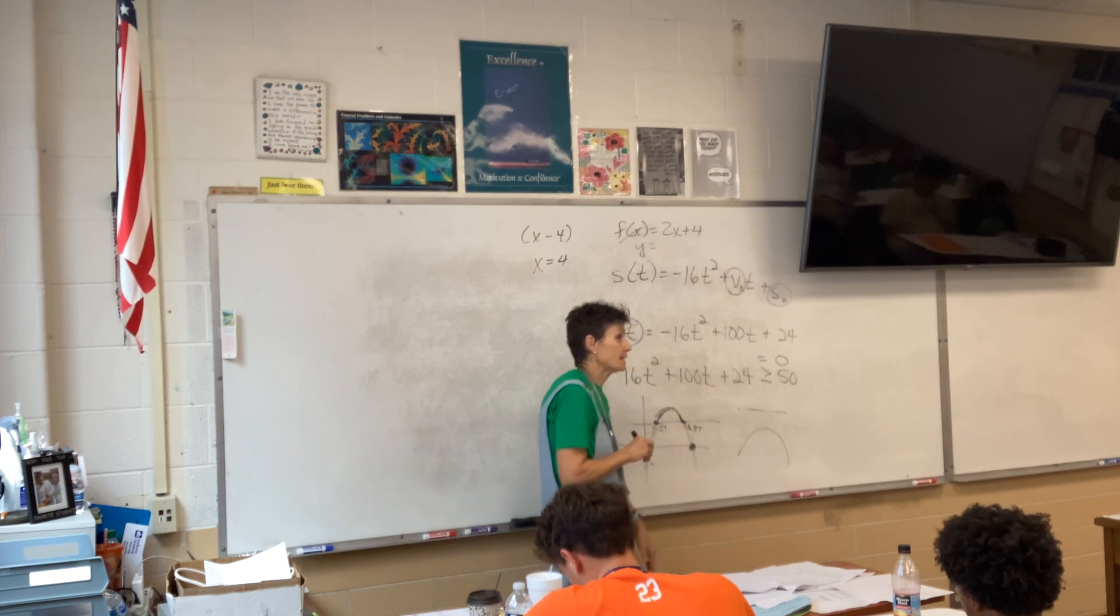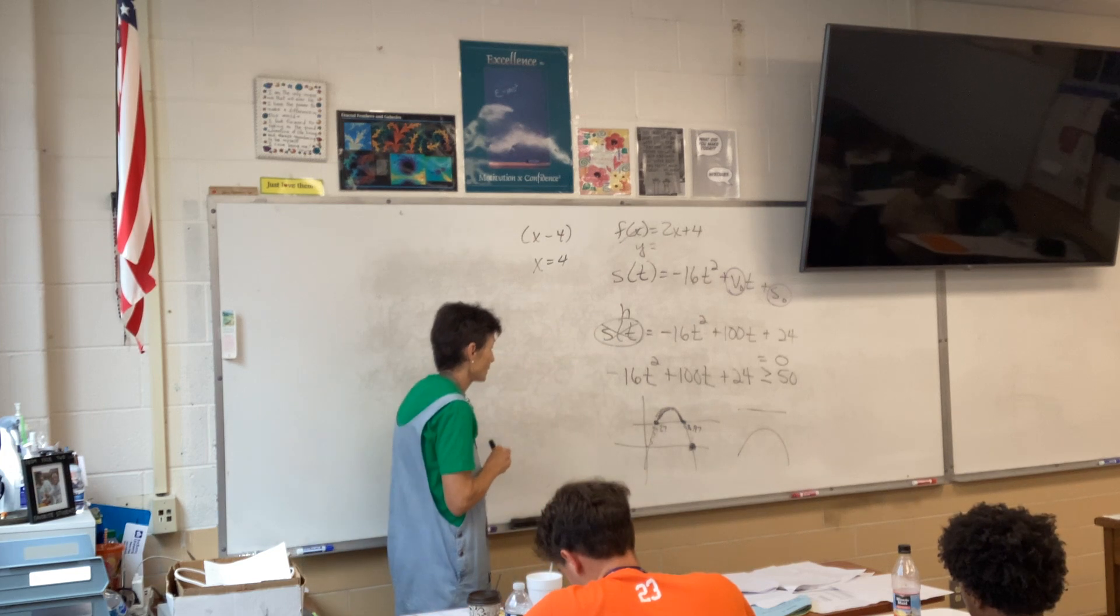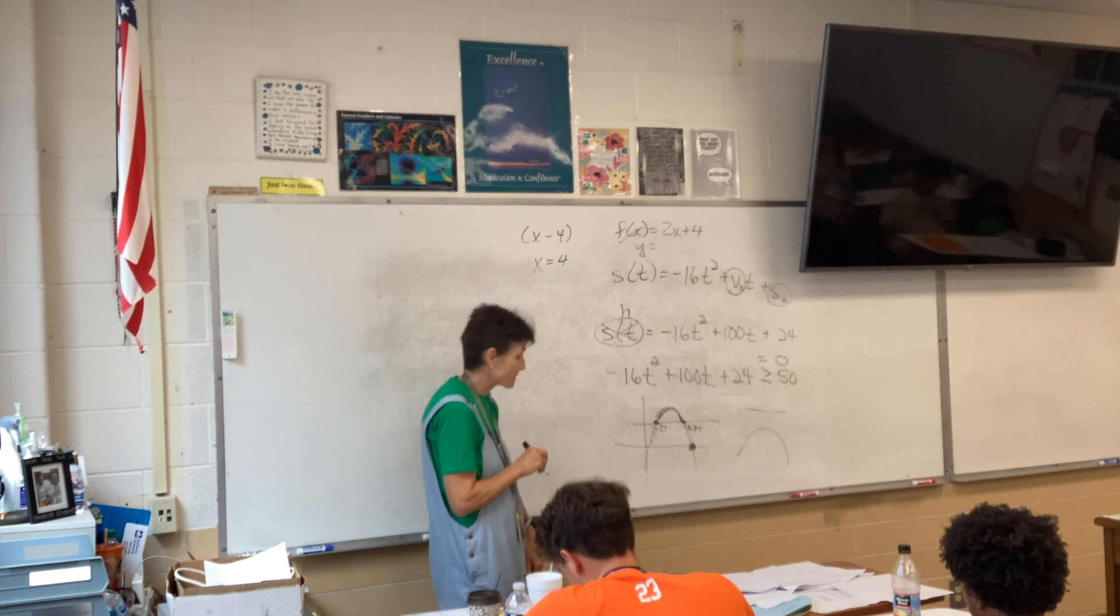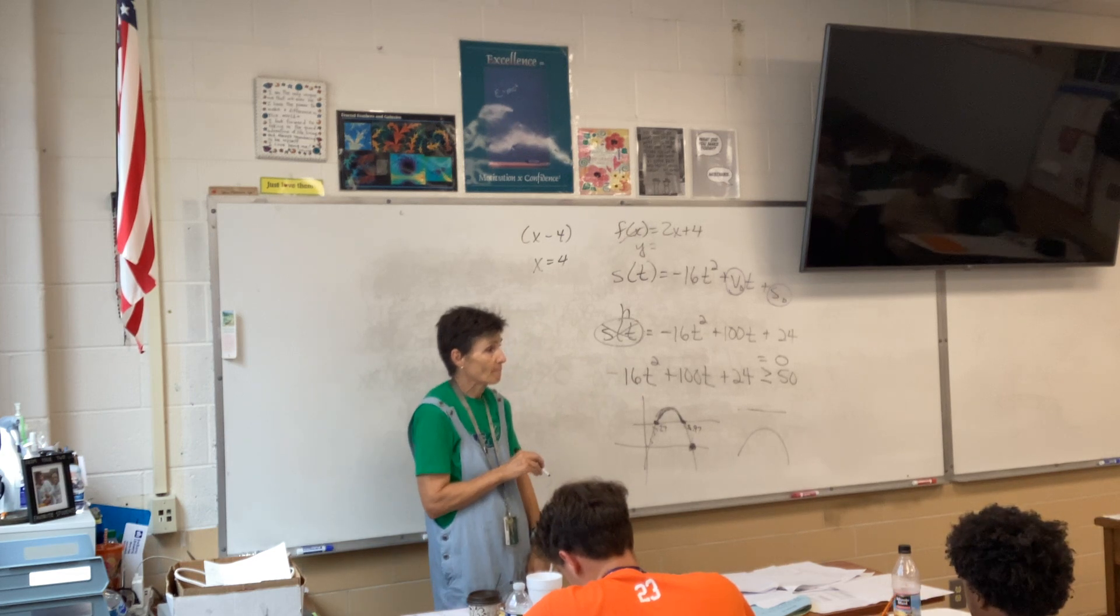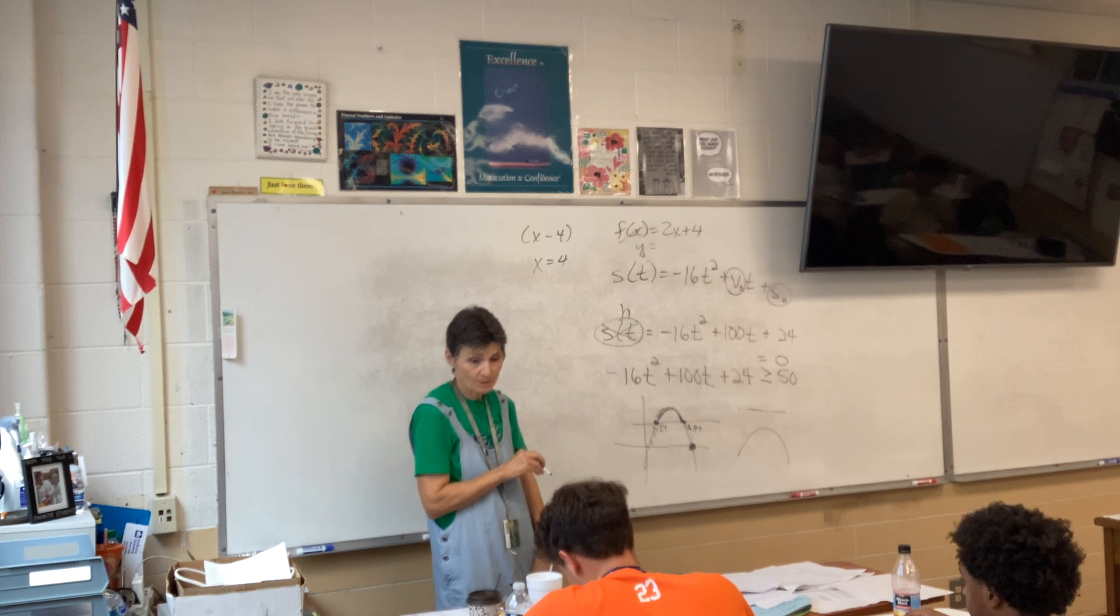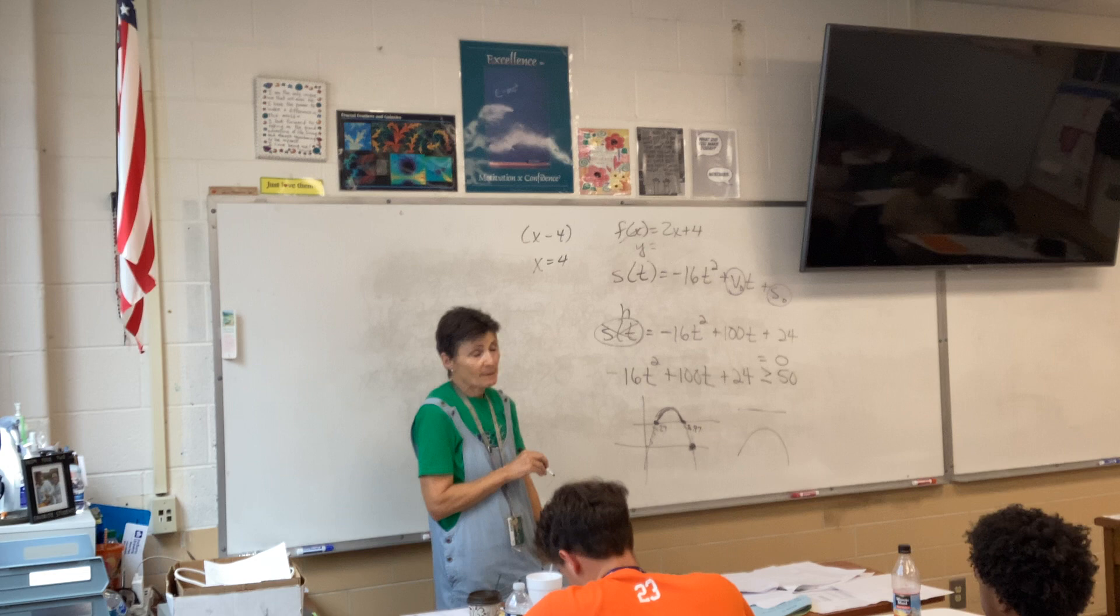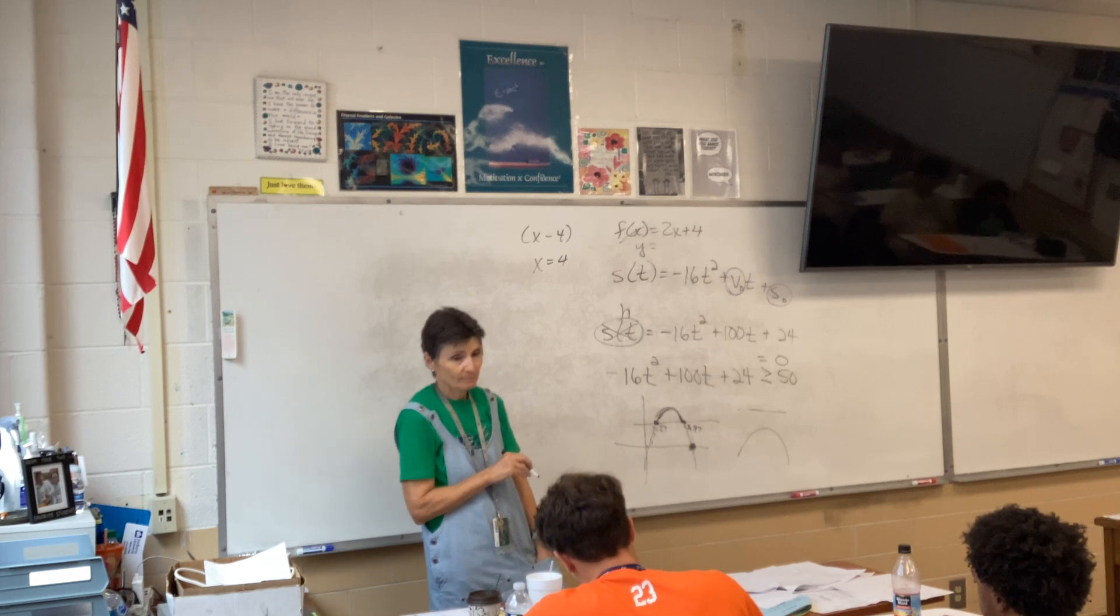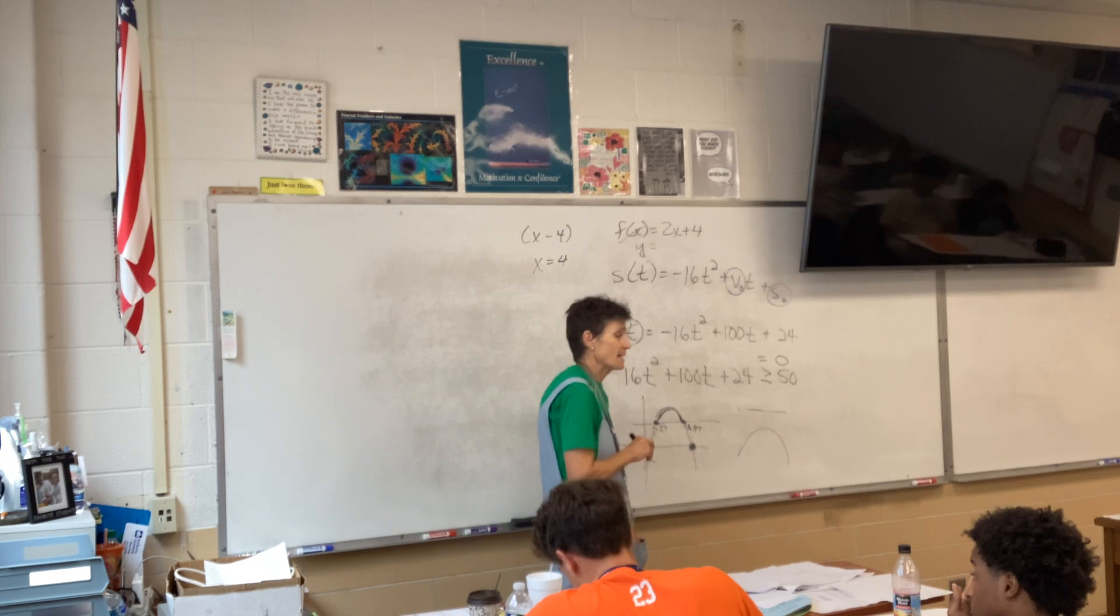You're going to find two answers. By the way, if you graph this, you're looking for the zeros, right? Where does it cross the x-axis? And you're going to get two answers, but probably one of them is negative, which means you throw it out, and the only right answer is the positive one that you get.